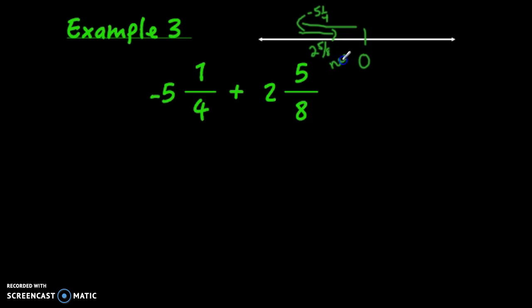These are going in opposite directions, so subtract their absolute values. But remember, you'll end up in the negatives. Set this problem up as 5 and 1/4 minus 2 and 5/8.